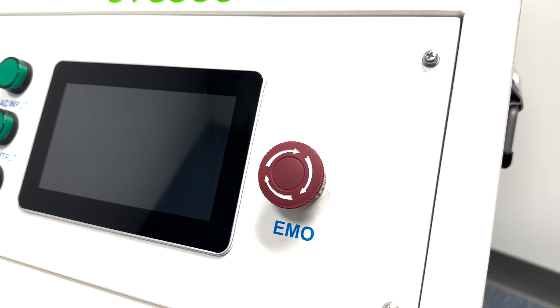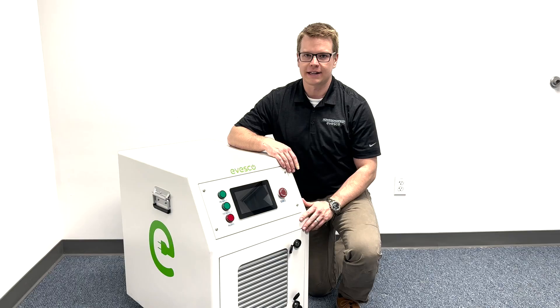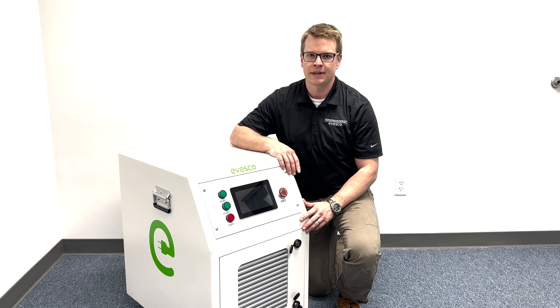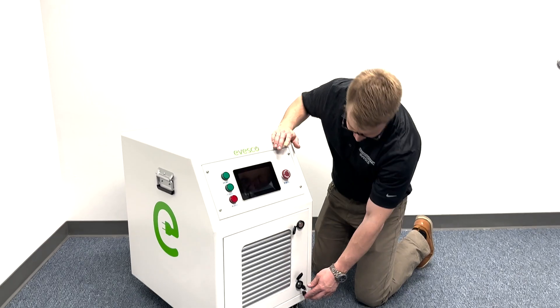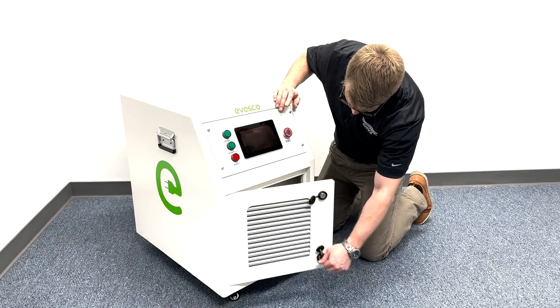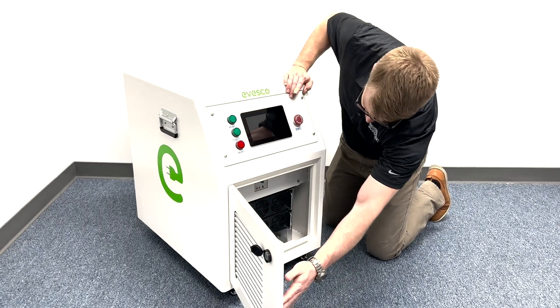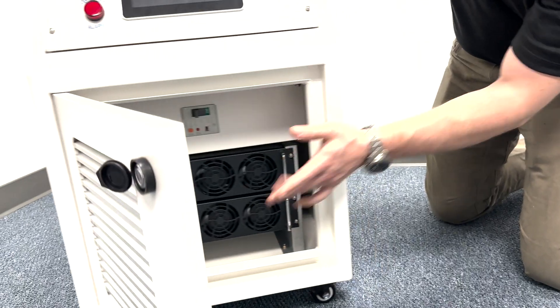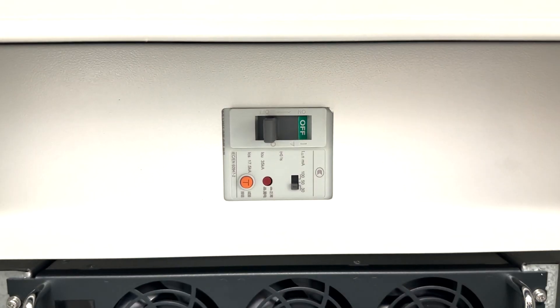To prepare for setup, the first thing you'll want to do is set up the emergency stop. Next, we'll go inside the machine and make sure that this breaker is in the off position.